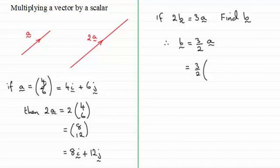We know the vector a is 4, 6. So just doing one and a half times that gives us the column vector 6, 9. Or you might want it in terms of the unit base vectors i and j, so that would be 6i plus 9j.